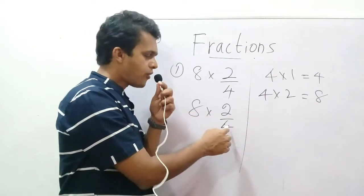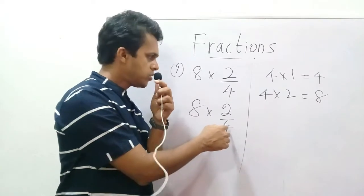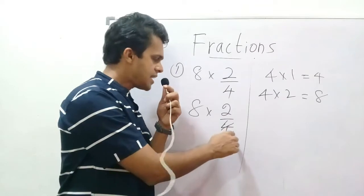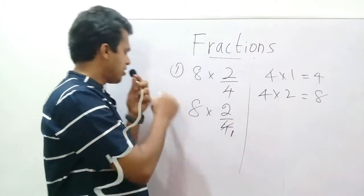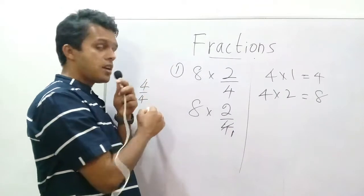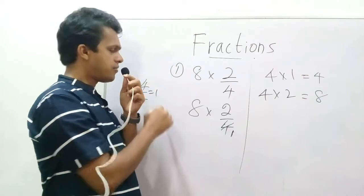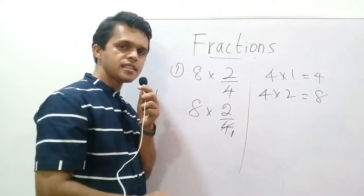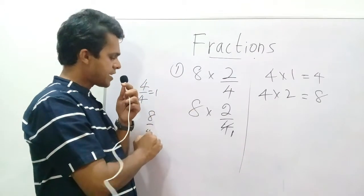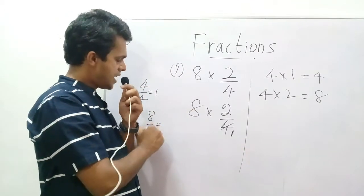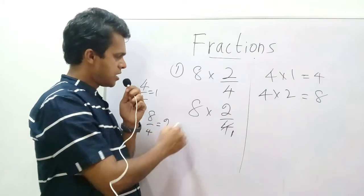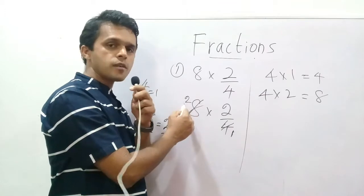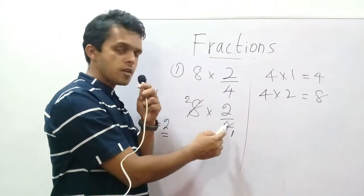You can simplify: 4 is divided by 4. So 4 upon 4 equals 1. Why did I write 1 here? Because 4 divided by 4 is 1. Here also, 8 is divided by 4. 8 upon 4 equals 2. So that 2 is written here. 1 time and 2 times.